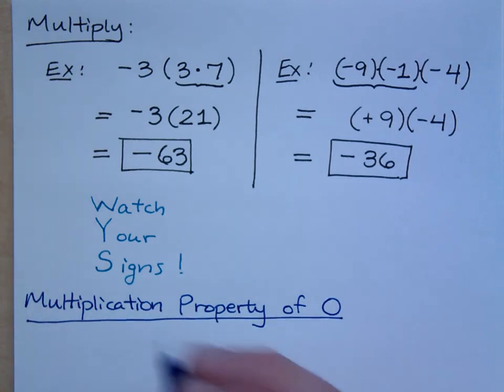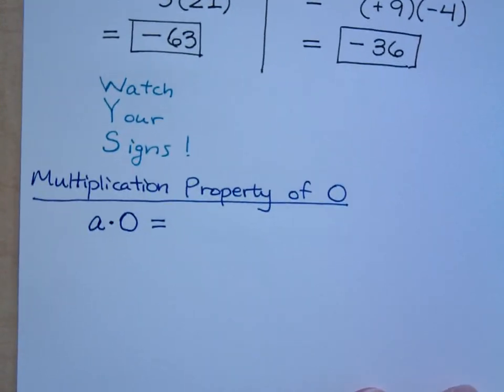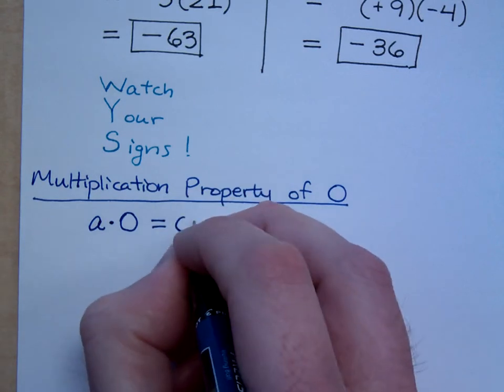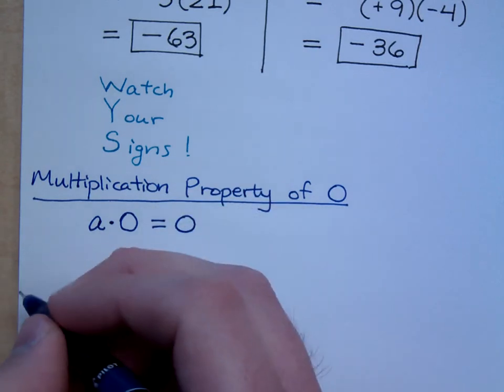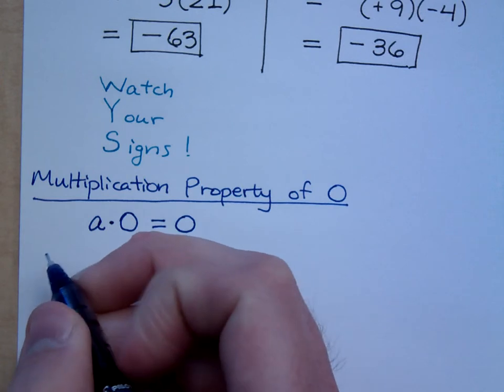And all this really says is that if you take any number represented by A, any number times zero should equal what? It's zero, right? Any number times zero is zero. Do you believe me? Yes.